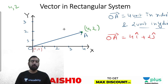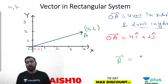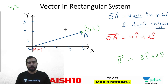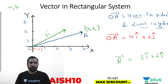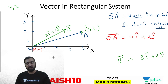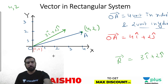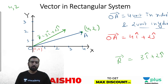If I give you a vector r = 3i + 2j, that means the vector is 3 units in x and 2 units in y — it looks like that in the coordinate system. Is this clear? This is how we represent vectors in the rectangular Cartesian system.